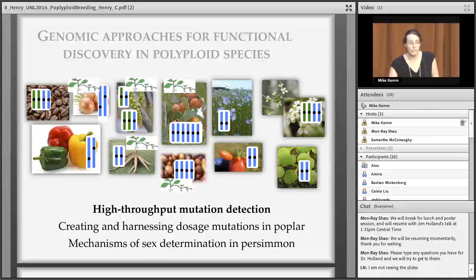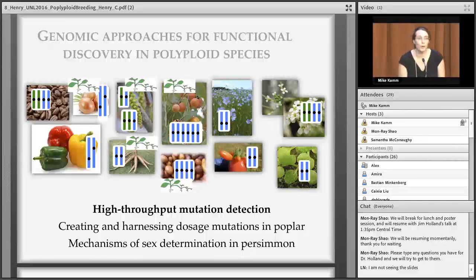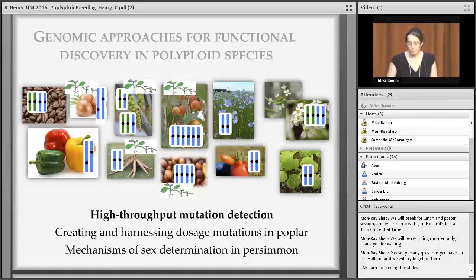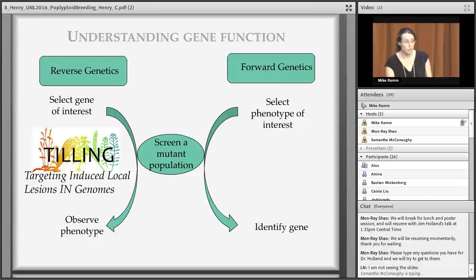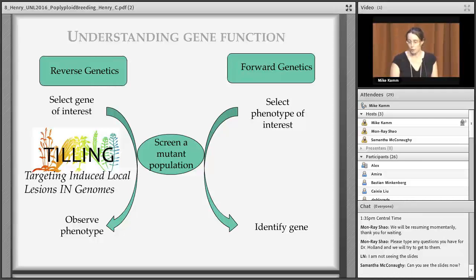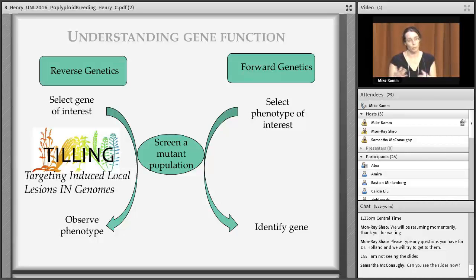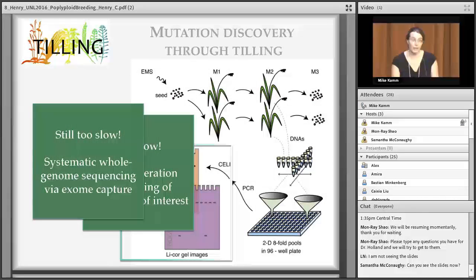Today I will talk about three different aspects of what we do. The first is high-throughput mutation detection. Then I will talk about dosage mutations in poplar, and finally the mechanism of sex determination in persimmon — quite widely different topics.